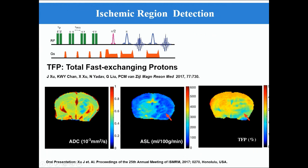Another application of VDMP is to detect the ischemic regions of stroke. For the normal healthy brain, the fast exchange map is very homogeneous. For the ischemic regions, the reduced pH will affect the exchange rate of fast protons and cause changes in the fast exchange map. By taking advantage of this, the ischemic regions can be detected.